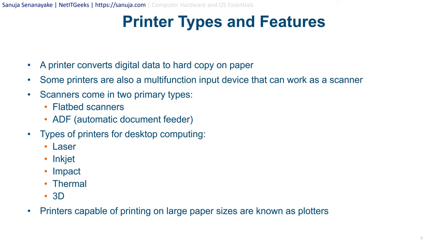A printer converts digital data into hard copy on paper. Some printers are also multi-function input devices that can work as a scanner as well. Scanners come in two primary types: flatbed scanners and ADF scanners, also known as automatic document feeder scanners. Types of printers for desktop computing include laser printers, inkjet printers, impact printers, thermal printers, and 3D printers. Printers capable of printing on large paper sizes are known as plotters.